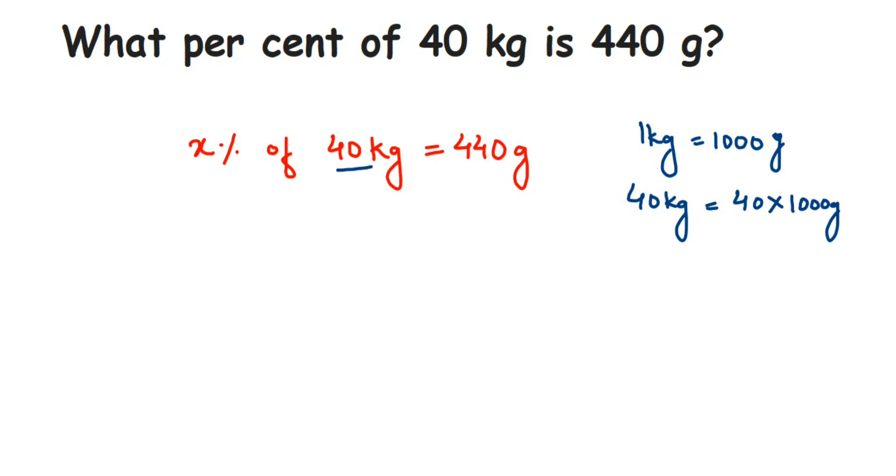40 kg will be equal to 40 multiplied by 1000 grams. So in place of 40 kg, I'm going to write down 40 multiplied by 1000. So X percentage of 40 multiplied by 1000 grams is equal to 440 grams.